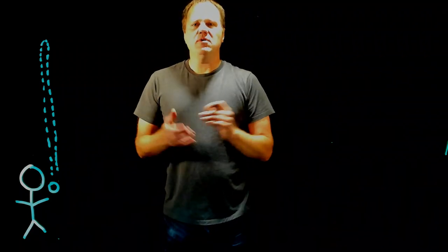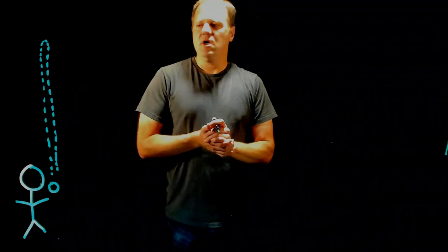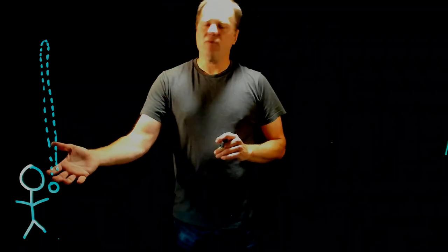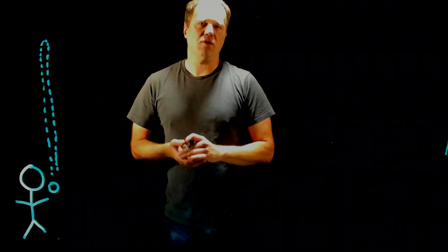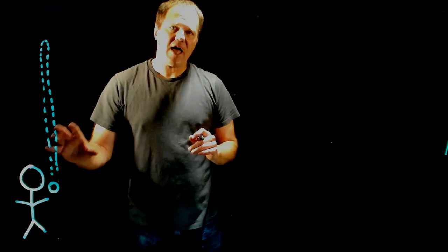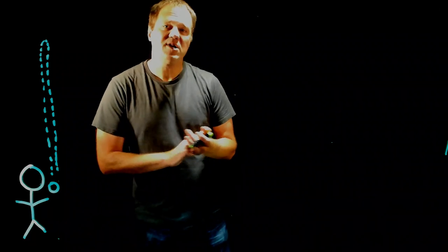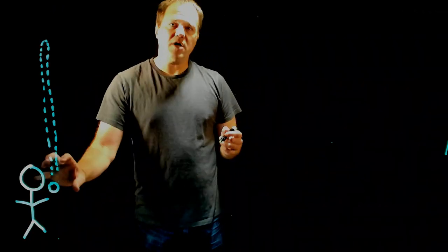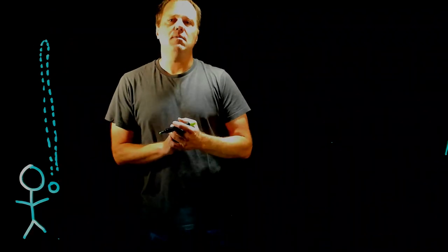Today I'm going to be using the constant acceleration kinematics equations for this particular scenario. A person throws a ball straight up into the air and it returns to their hand in 3.8 seconds. Based on that information plus some things we can logically deduce, I'm going to determine the velocity that the ball left the person's hand plus the maximum height.